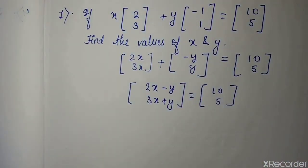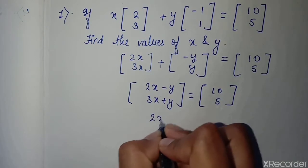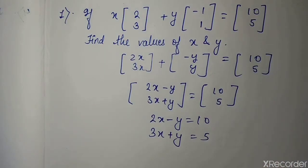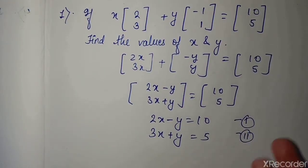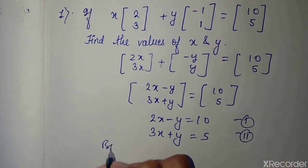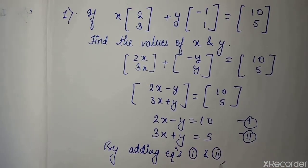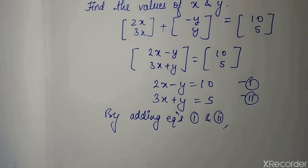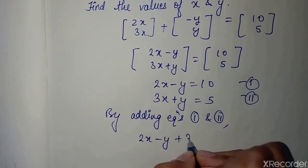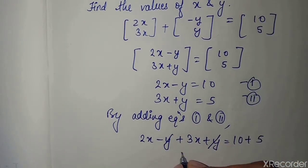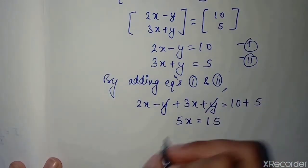Now you have two equations. This is equation 1 and this is equation 2. By adding equations 1 and 2: 2x minus y plus 3x plus y equals 10 plus 5. The plus y and minus y cancel, so 5x equals 15.